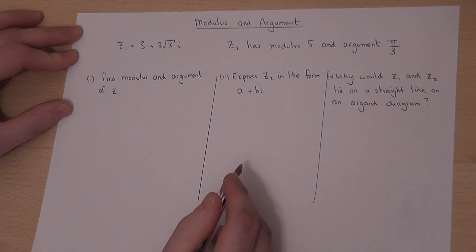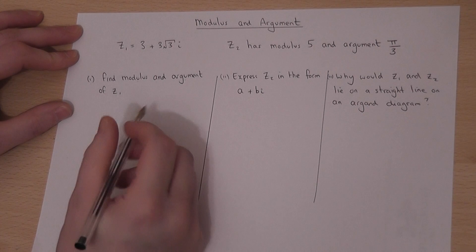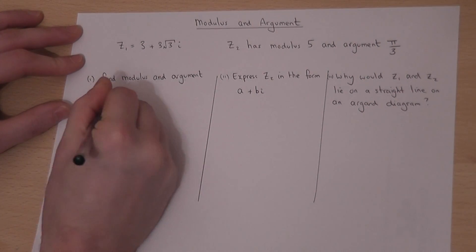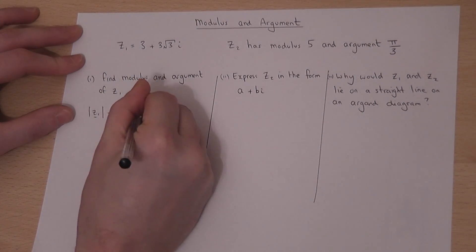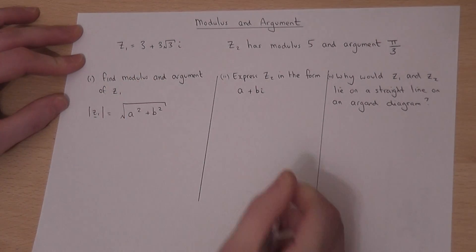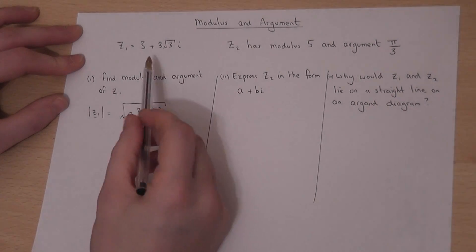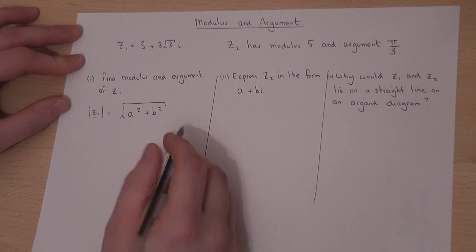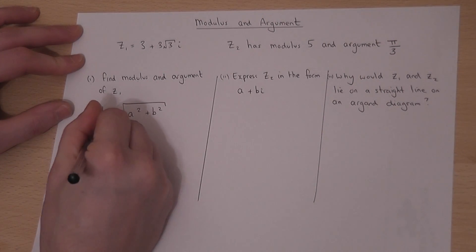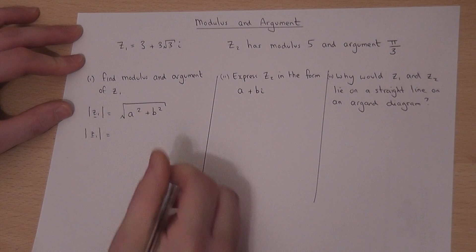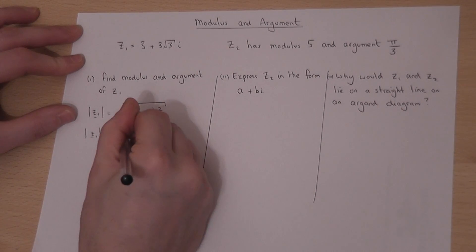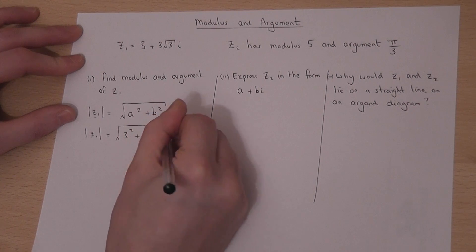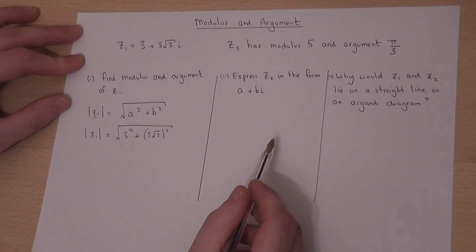The modulus is found by taking the square root of a squared plus b squared, where a is the real component and b is the imaginary component. So to find this, we have to work out what 3 squared is and what 3 root 3 squared is, add them together and then square root.